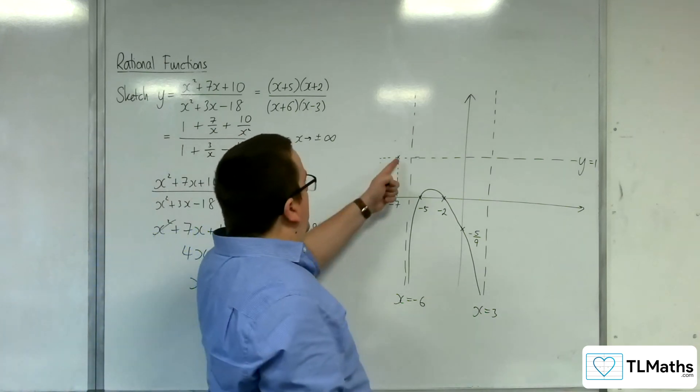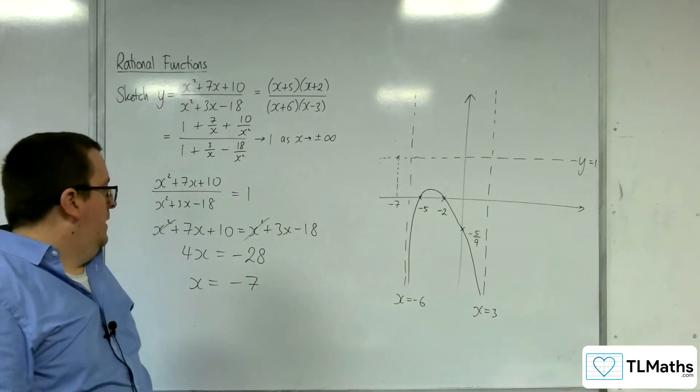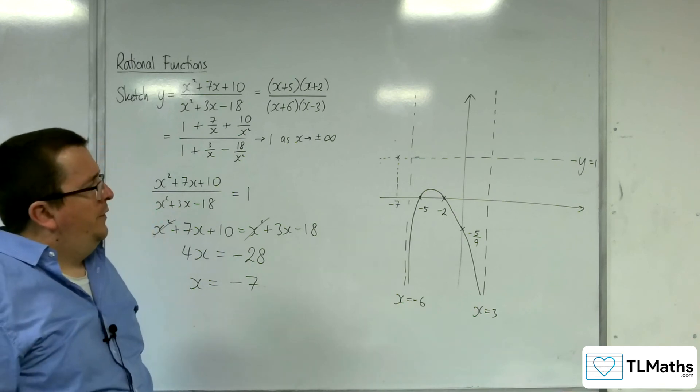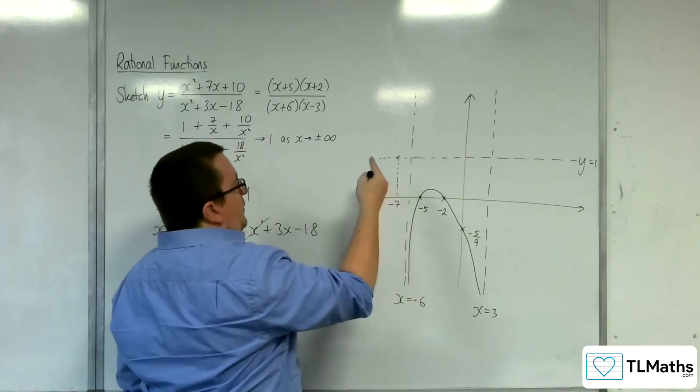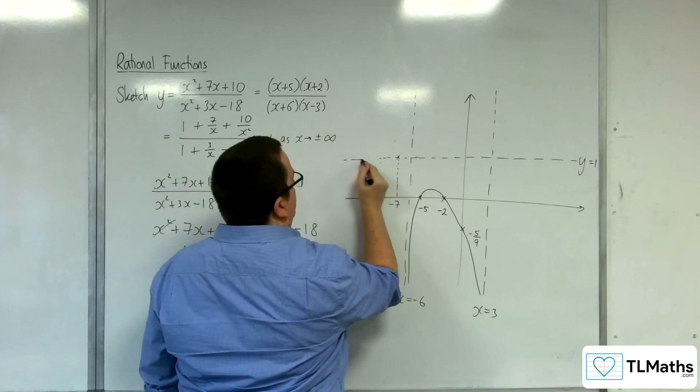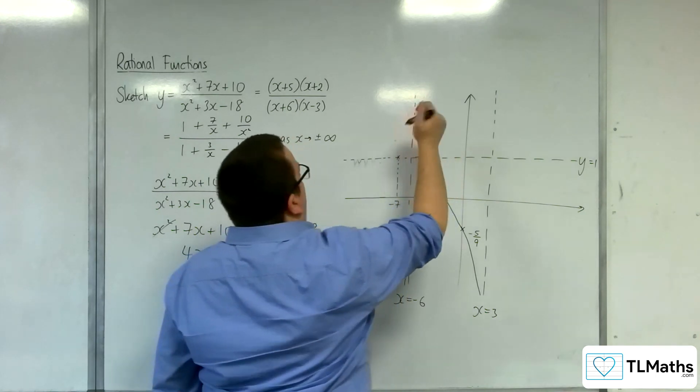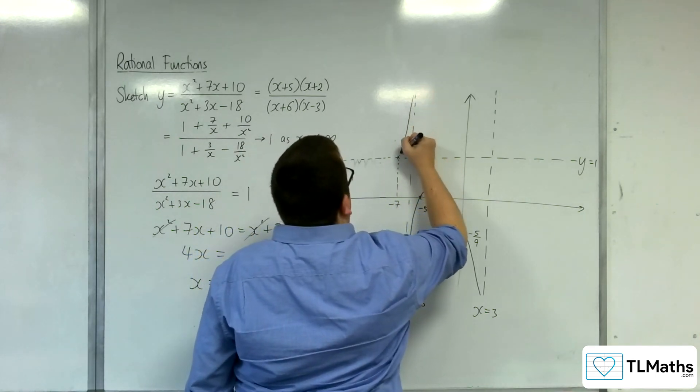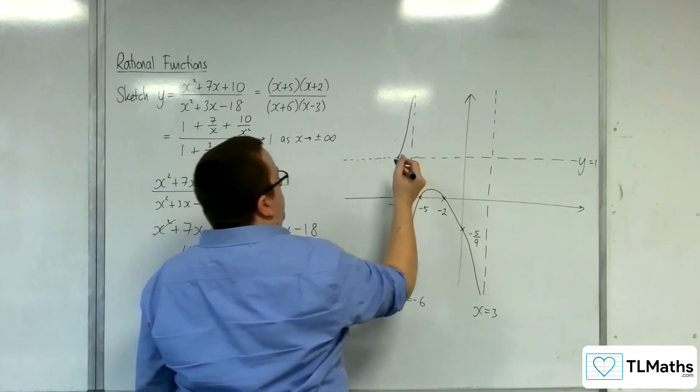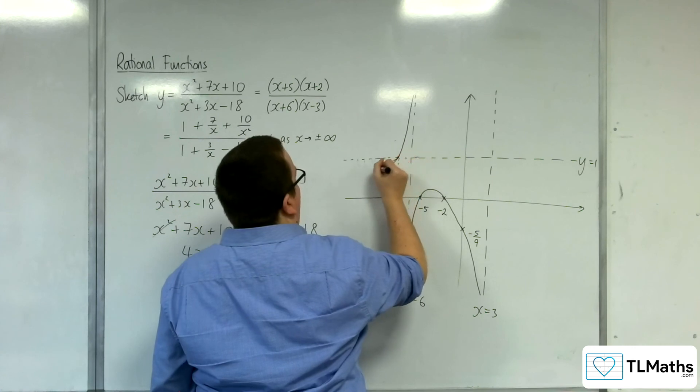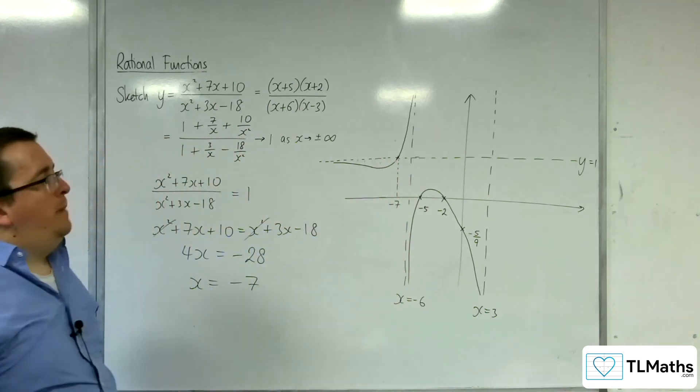So interesting this, isn't it? That it's crossing through x equals minus 7, y equals 1. So what does that mean? Well, it can't be coming up from this direction. Because that would mean it would have to cross the x-axis. So it must be coming down this way, crossing through at minus 7. But it's still got to tend towards y equals 1. So it must then come back on itself in order to tend towards that line. So it must look like that.